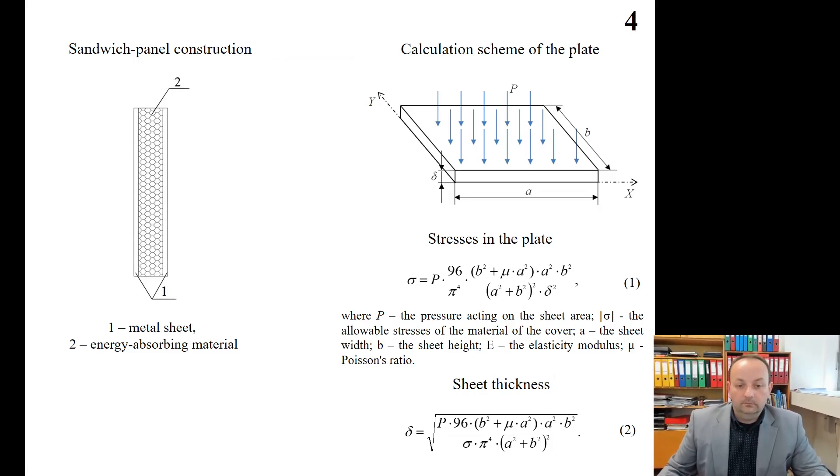One possible solution of the described problem can be an application of sandwich panels as components of container sidewalls to ensure their needed strength. The sandwich panels are composed of two metal sheets. Energy absorbing material is placed between them. Such a solution can improve the strength of the container while reducing their weight.